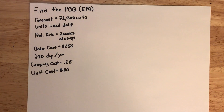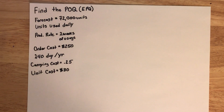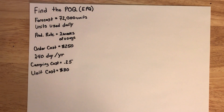So given this, we have some variables that have been given to us in this problem. We are told to find the POQ. The data we are given is that the forecast for the year will be 72,000 units, the units are used every single day, the production rate equals two weeks of usage, the order cost will be $250 per order, the factory works 240 days per year, the carrying cost is 25%, and the unit cost is $80.